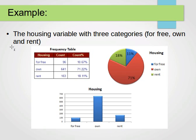Here we have an example from a housing dataset with three categories: free housing, owned house, or rented house. We build a frequency table with counts of each. In this small-scale study of 900 people, 96 live for free, 641 own the houses they live in, and 163 live in a rented house. Converting to percentages: 96/900 = 10.67%, 641/900 = 71.22%, and 163/900 = 18.11%.